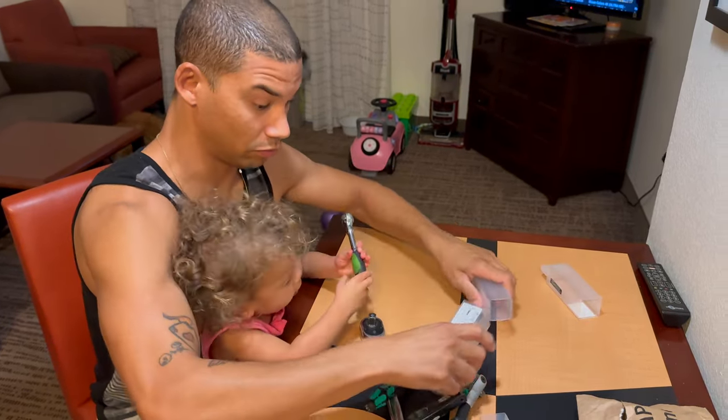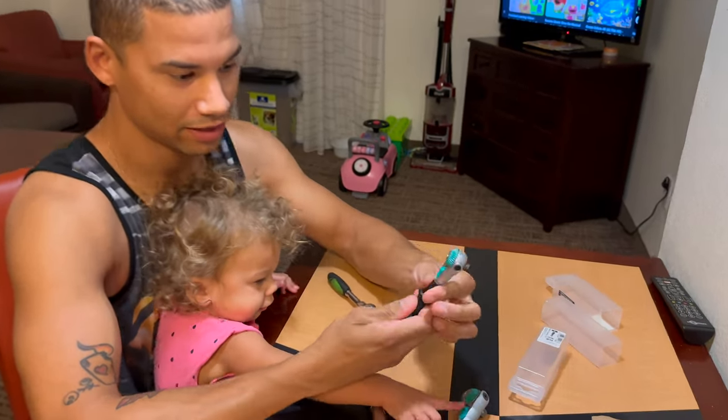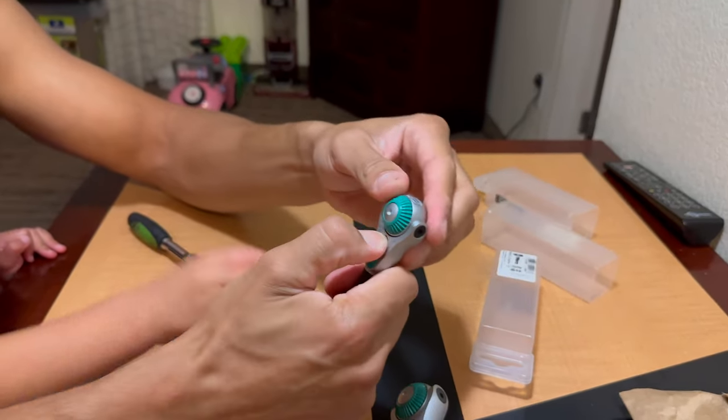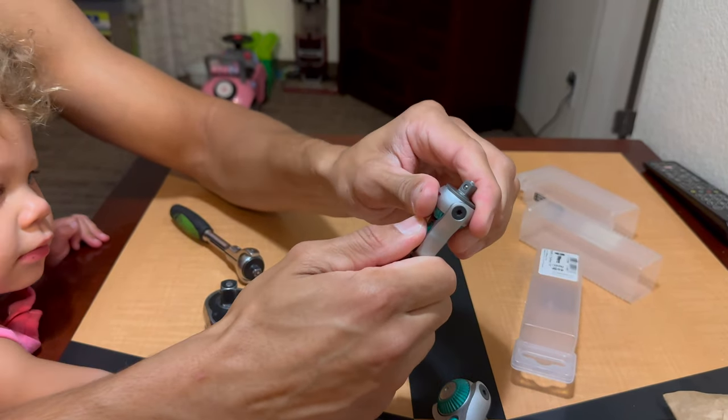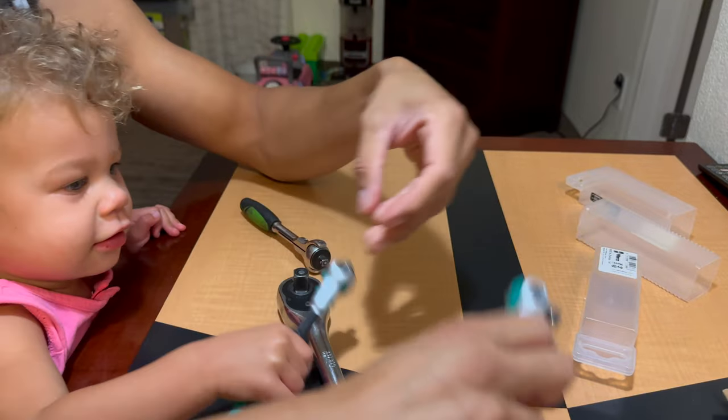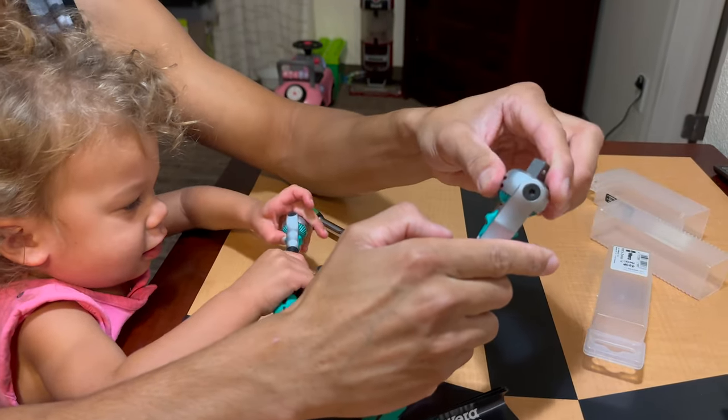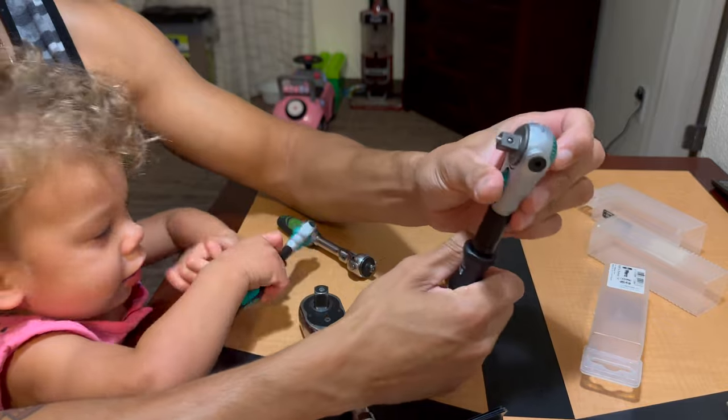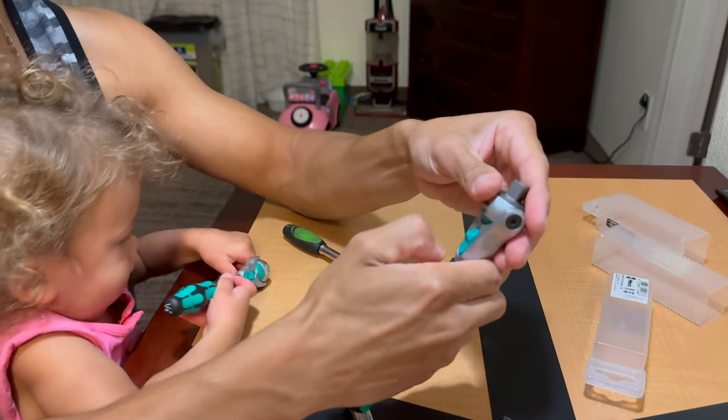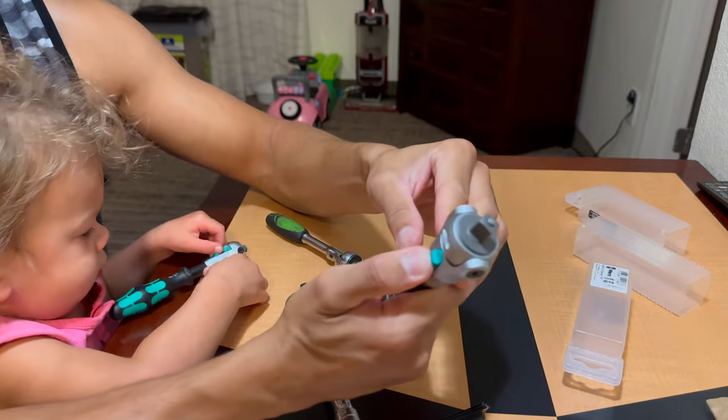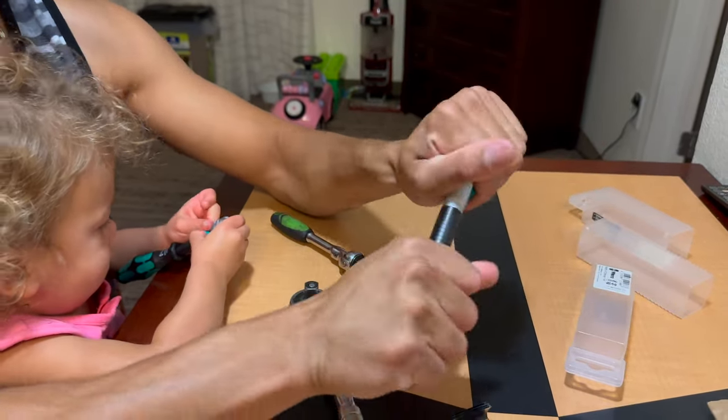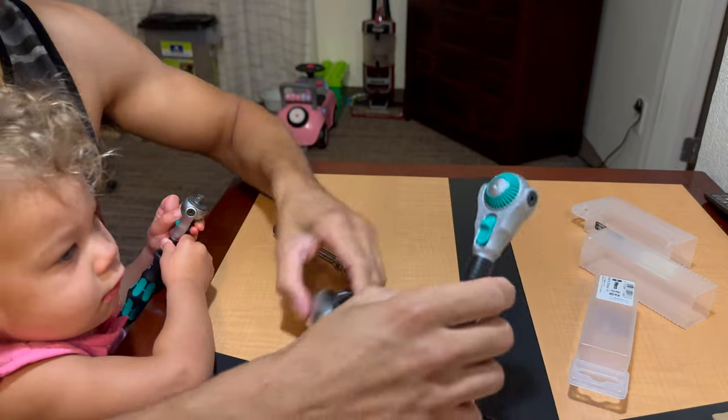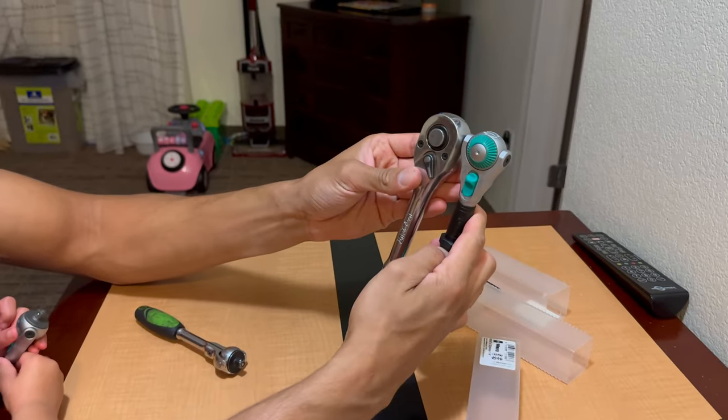These are super nice. This part right here spins so you can hold on to this and spin it. These lock into a couple different positions. This will lock there, it will lock right here and right here. You got a nice button here that pulls that out. When it's in like this you go up and it'll release it. So it also has this, feels good. This isn't going to slip, feels nice and solid.